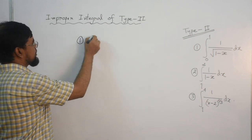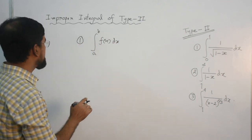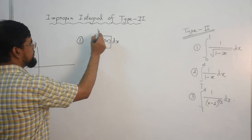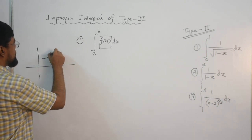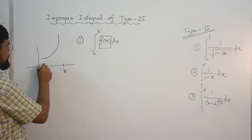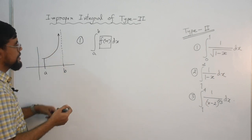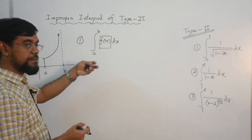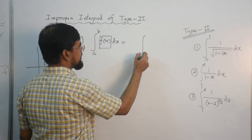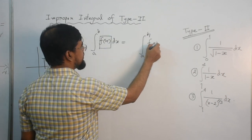First definition: consider the integral from a to b of f(x) dx. This integral is improper because the integrand f(x) becomes infinity at its upper limit b. You can see it here — you want to calculate the area from a to b, but at b the integrand becomes infinity. That's why this integral is improper. To make it proper, you need to consider a finite number k1 instead of b.